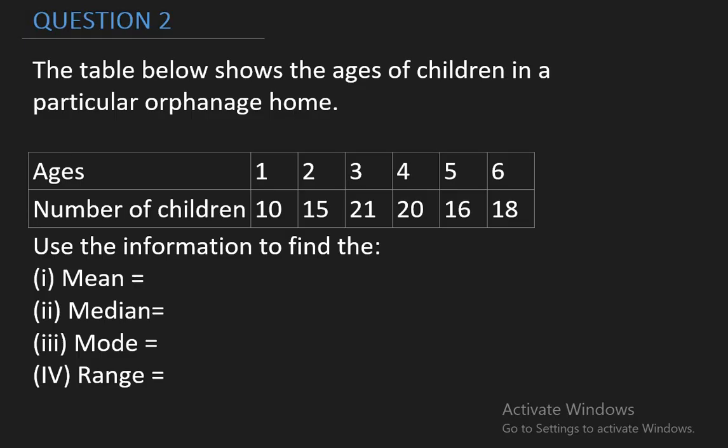To get the mean, you simply add up all the numbers and divide by how many there are. Well, this would be a lot of work. Number of children that are age 1 are 10. So, you just have 1 in 10 places: 1, 2, 3, 4, 5, 6, 7, 8, 9, 10. Number of children that are age 2 are 15: 1, 2, 3, 4, 5, 6, 7, 8, 9, 10, 11, 12, 13, 14, 15.